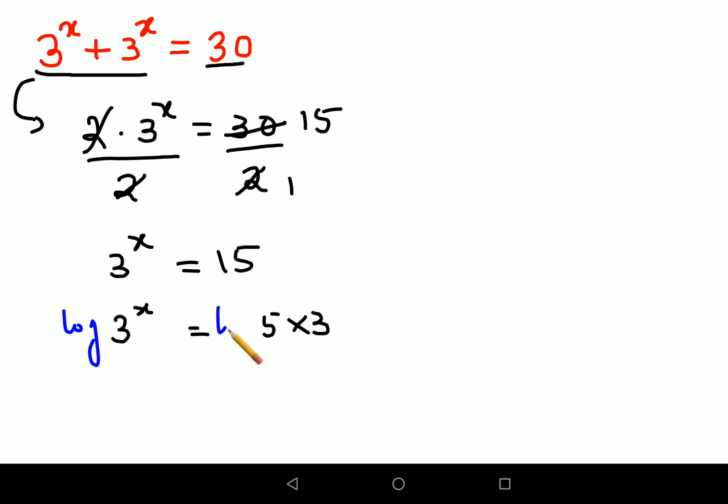So here what we will do is take log on both sides. Now in your LHS it's in the form of log of a raised to m. Whenever you have a log of any number raised to an index, that index comes ahead and it gets multiplied to log of that number. So in this case it will become m log a, so here this becomes x log 3.